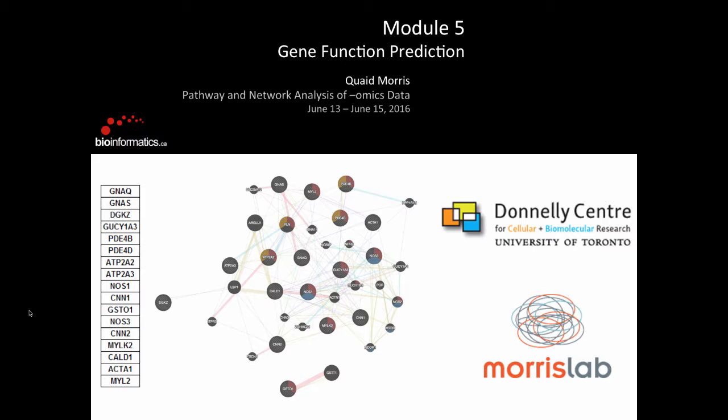Today I'm going to talk about a tool that I developed with Gary Bader that we think is very useful for what I'm going to call gene function prediction. That idea encompasses a lot of different concepts, so we're going to break it down into two different use cases, and I want to introduce you to some network concepts that are important in gene function prediction.